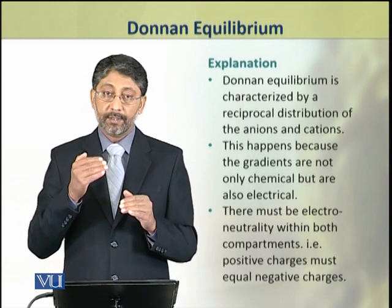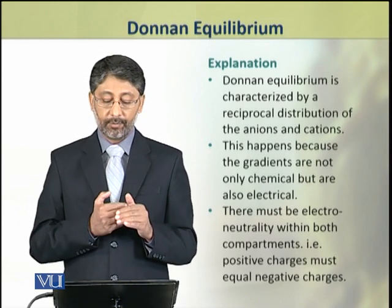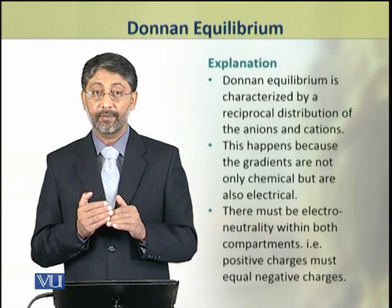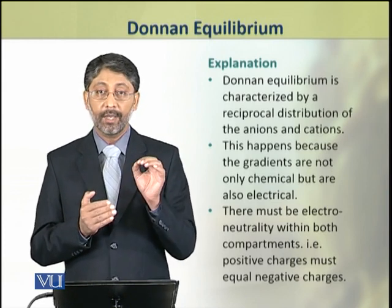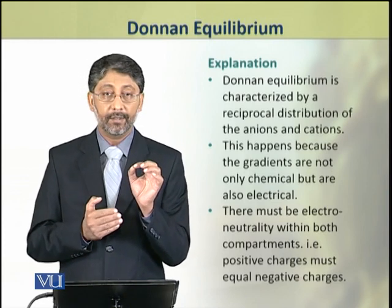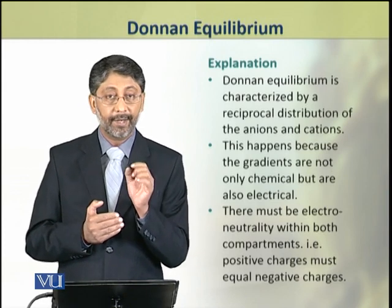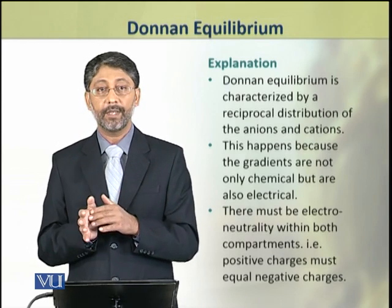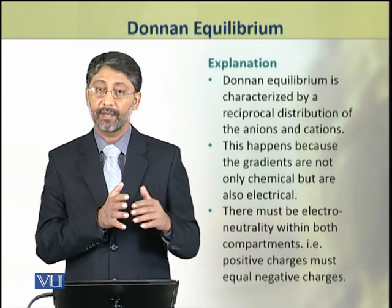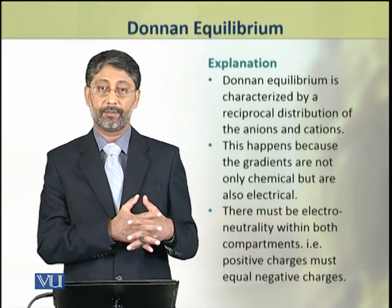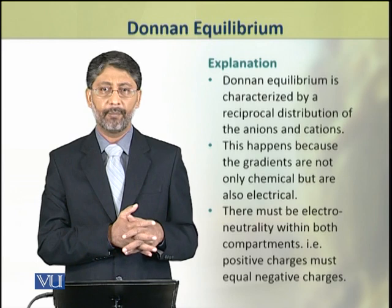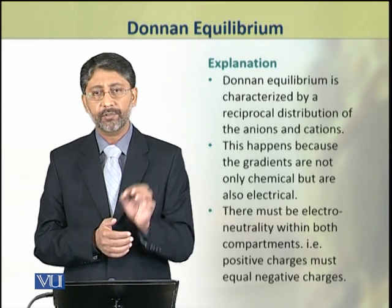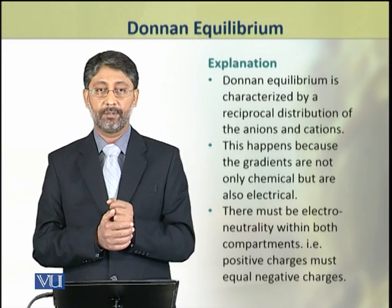We can explain this Donnan equilibrium on the basis of distribution of anions and cations. This unequal distribution happens because we are considering gradients — and gradients are not only of chemical concentrations, but are also electrical in nature.